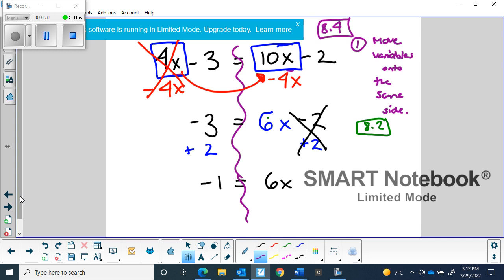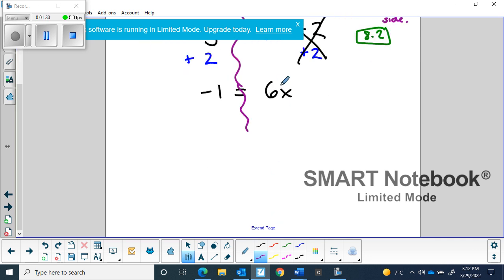And we've got one more step here. The 6 is attached to the x using multiplication. So to unattach them we're going to divide both sides by 6. When I do that the 6 is gone and x is going to be equal to negative 1 over 6. And that would be the final answer.